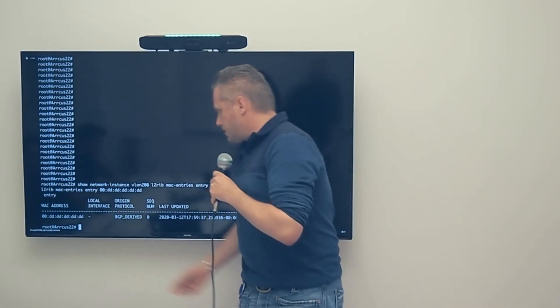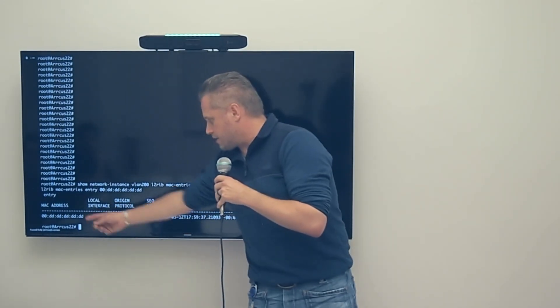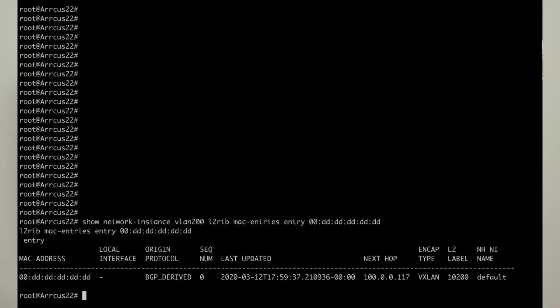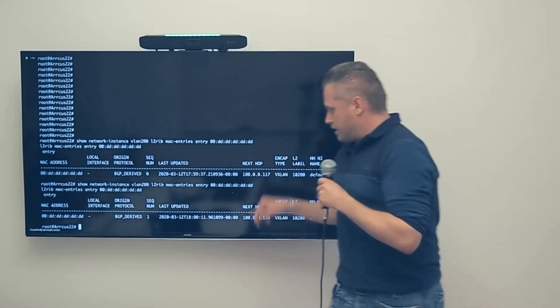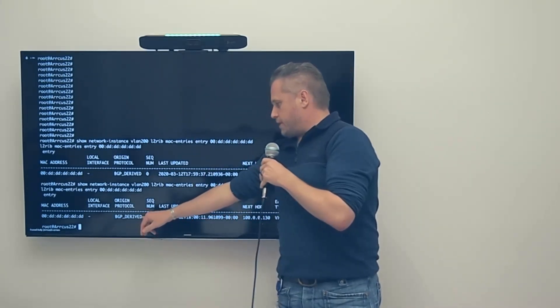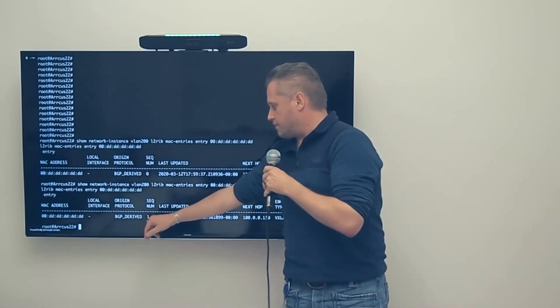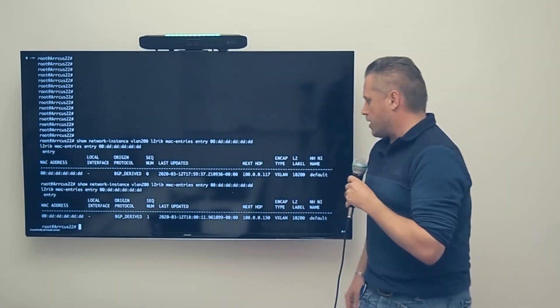Here we are on the Arrcus VTEP and you can see this is the source MAC, 00 in all Ds. As you can see, it's currently behind the Juniper VTEP 117 and the sequence number is 0. We'll now initiate a MAC move. As you can see from our perspective, it's BGP learned. Once the MAC moves, we should see the sequence number increment. Now it's moved behind the MetaSwitch VTEP. You can see it's still BGP derived from the Arrcus VTEP standpoint and it has a sequence number of 1.